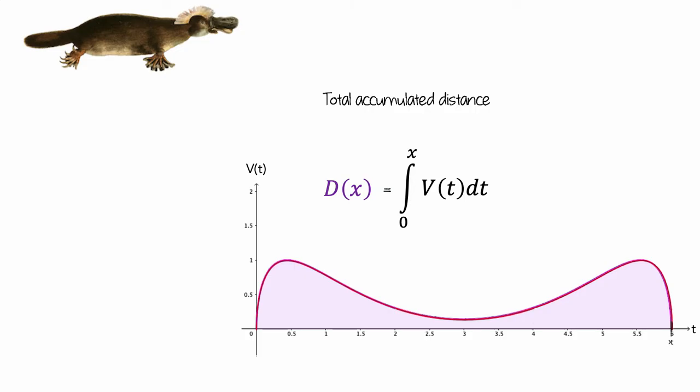Now, one thing that might look a little strange is that there are two variables, t and x. Both t and x are time variables, however, they serve different purposes. The x variable tells you that you're accumulating distance from 0 to x, and the t variable is used in the product of v times dt to compute the distance.